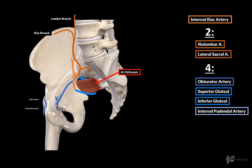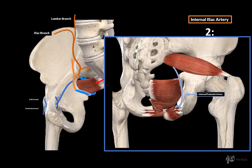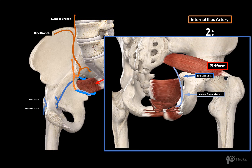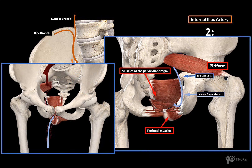The last artery that leaves the pelvic cavity completely is the internal pudendal artery. This artery also leaves the pelvis in the space below the piriformis muscle. Following the artery, you will see that it winds around the spina ischiadica, and then continues into the space between the perineal muscles and the muscle of the pelvic diaphragm, before continuing towards the anterior side where it terminates. In males it terminates as the deep and dorsal arteries of the penis, while in females it terminates as the deep and dorsal arteries of the clitoris.